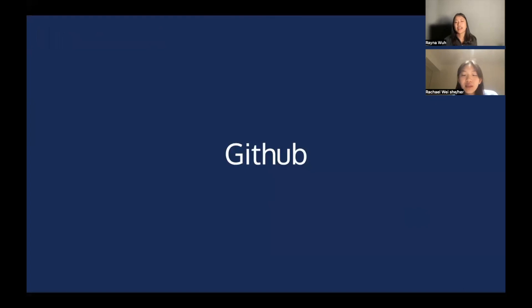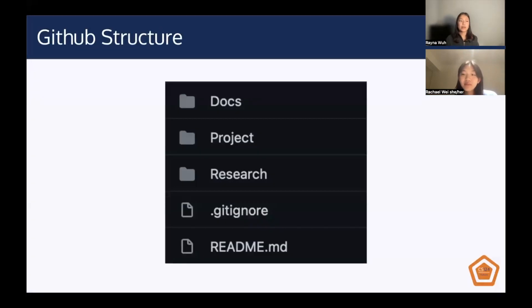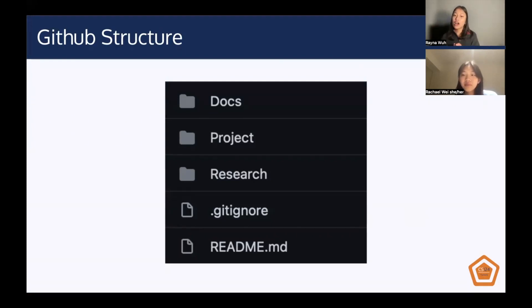We're going to talk about how we're going to be using GitHub in this course. Your project managers will go into this in more depth with you. This is specifically for your project. Looking at the repository structure, we have a docs directory, a project directory, a research directory, a gitignore, and a readme.